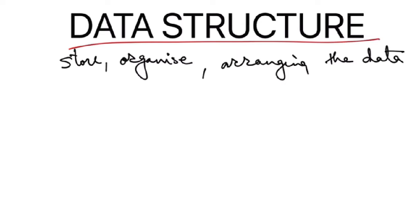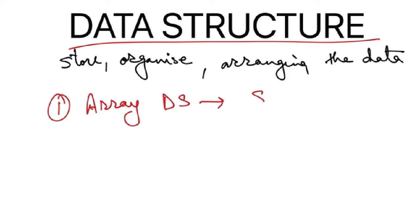We do this so that data can be accessed and updated efficiently. Depending on the project or whatever you are trying to do, you have to choose the right data structure. When you put data in a sequential manner, it is called array data structure — Array DS means you are putting things sequentially.